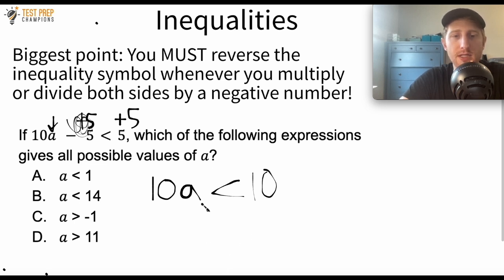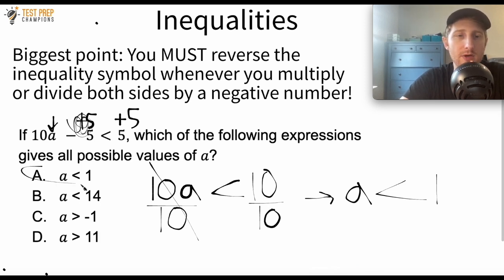So to get the A by itself, the next step is to divide by 10 on both sides. Now if I divide by 10 on the left, the 10s cancel out. If I divide by 10 on the right, I get 1, because 10 divided by 10 is 1. So I will now have A is less than 1. And remember, whenever you multiply or divide both sides by a negative number, then you have to reverse the inequality symbol. But in this case, we did not divide or multiply both sides by a negative number, so we just leave it as it is. So A is the correct answer here.